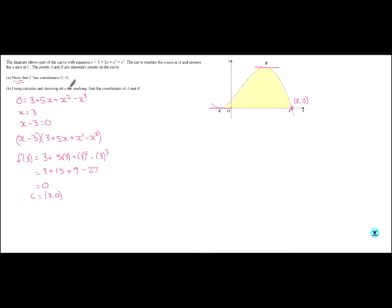So, b, using calculus, show the coordinates of a and b. It's going to be quite a lot of work this because we've got two points. We've got to work out which one is the maximum, which one is the minimum. But we know that the derivative, the gradient function, is 0. So, that's what we're going to have to do.